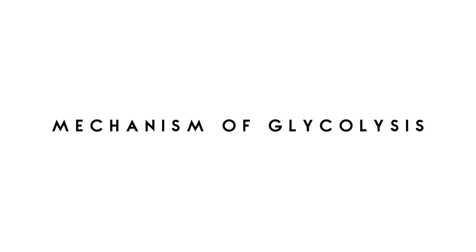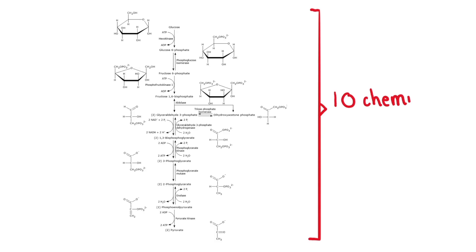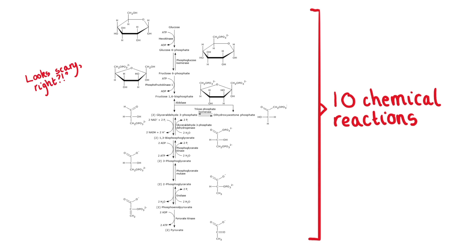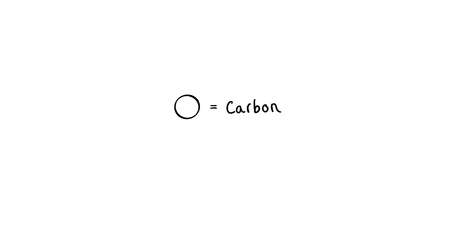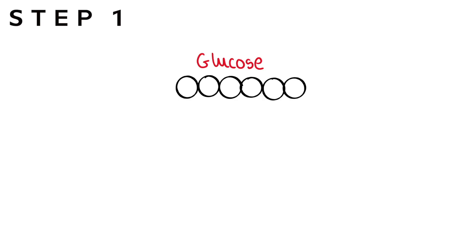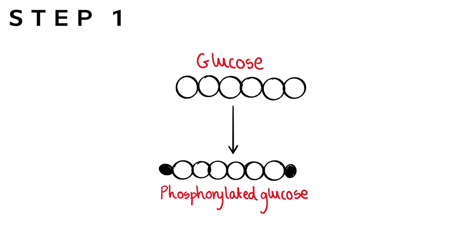Now we'll look at the mechanism of glycolysis. Glycolysis is actually a series of 10 reactions in total, but we'll go through a simplified version broken into three main steps. In the diagram, large circles represent carbon atoms and smaller ones represent inorganic phosphate (Pi).